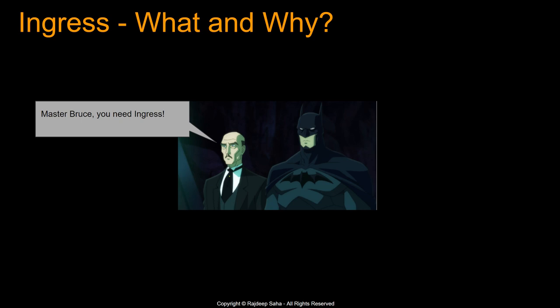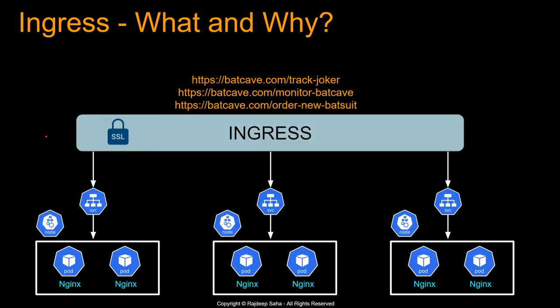Kubernetes ingress is an API resource that allows you to manage external or internal HTTP or HTTPS access to Kubernetes services running in a cluster. It supports multiple features, including host or path-based routing, TLS, WebSockets, HTTP/2, AWS WAF, etc.